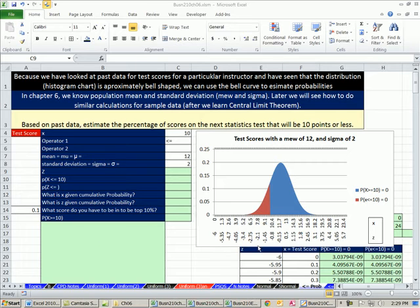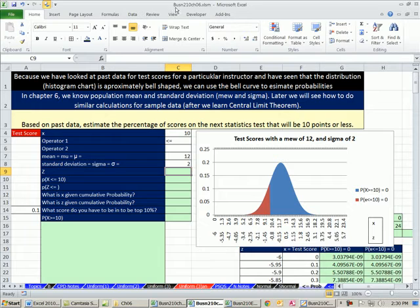Welcome to Excel 2010 statistics video number 57. If you want to download this workbook, Business 210 Chapter 6.xlsm, click on the link below the video. We're starting on the sheet less than probability. In this video, we're going to look at the new Excel 2010 normal distribution functions.